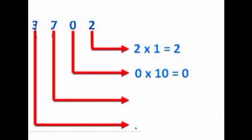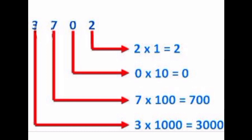To find the place value of 7 — dears, 7 is in which place? Yes, very good — hundreds place. So, 7 into 100 is equal to 700. Therefore, the place value of 7 is 700. Are you clear? Okay.